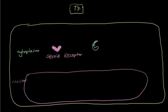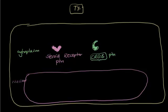Let's draw another protein and fill it with green — we'll call this the CREB protein. So far you have a steroid receptor protein and another protein called CREB, which stands for cyclic AMP response element binding protein. Again: cyclic AMP response element binding protein.